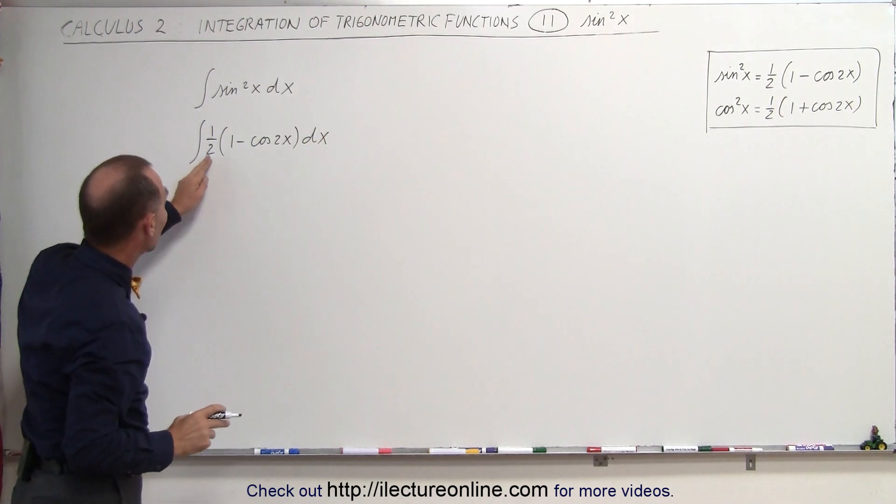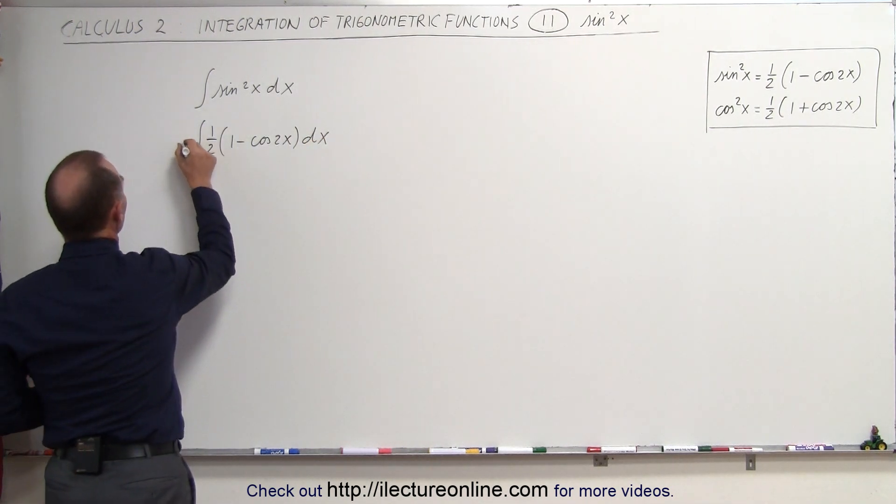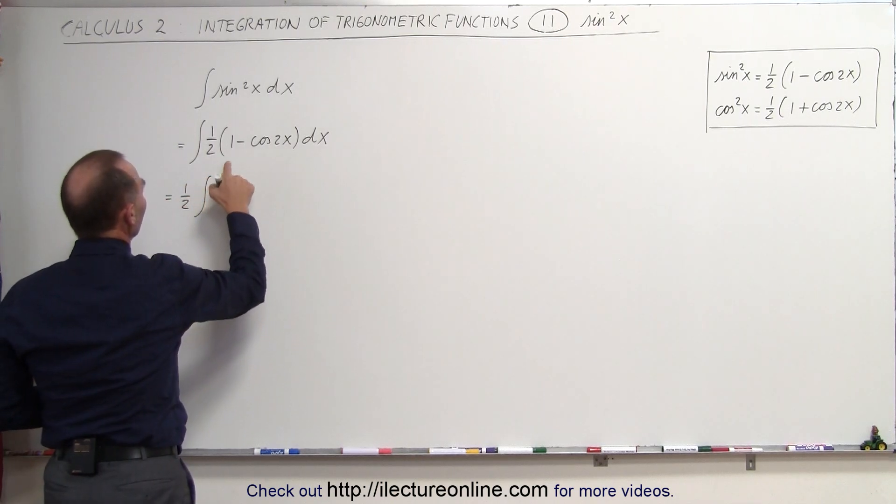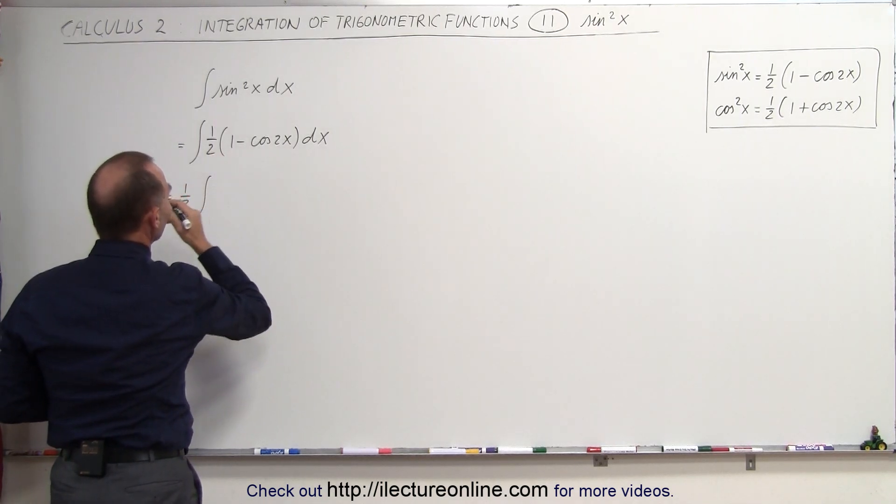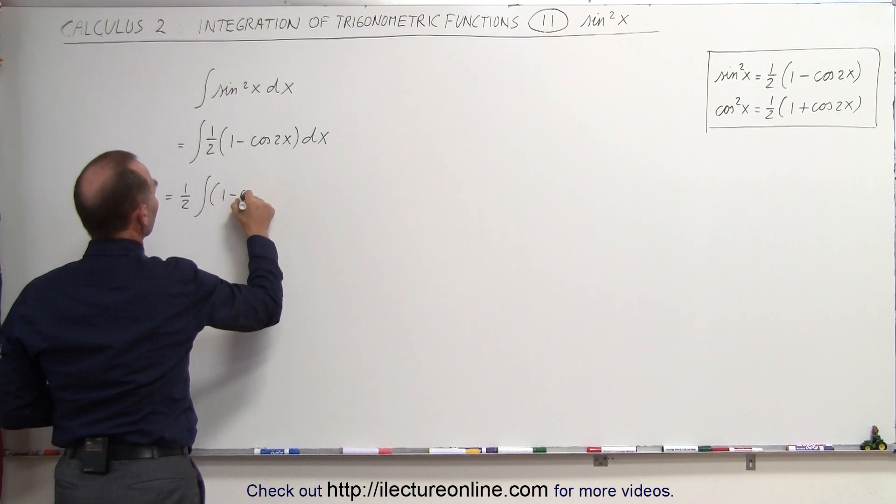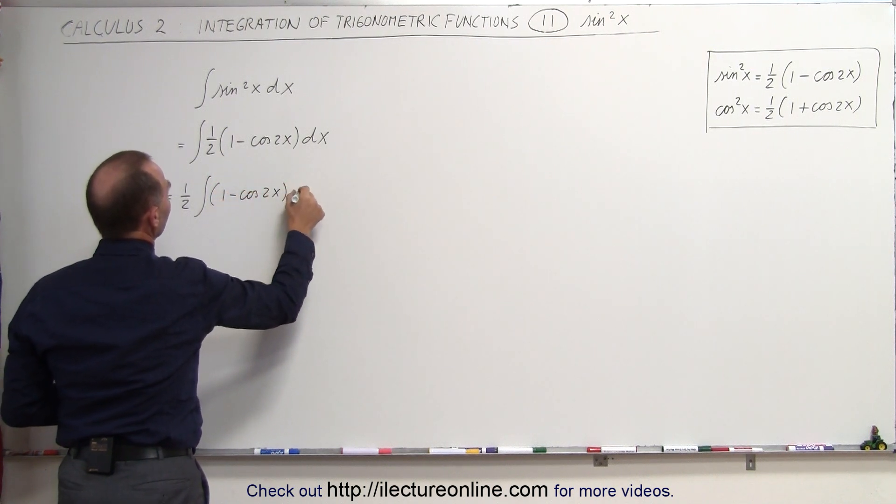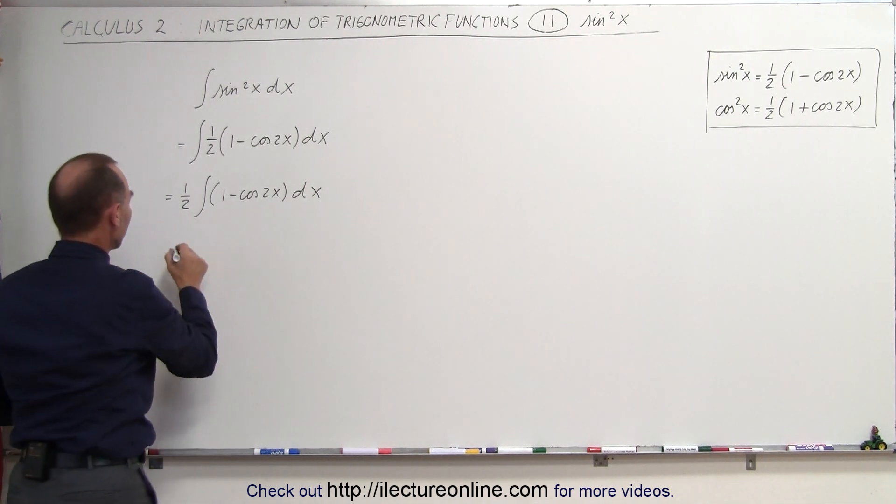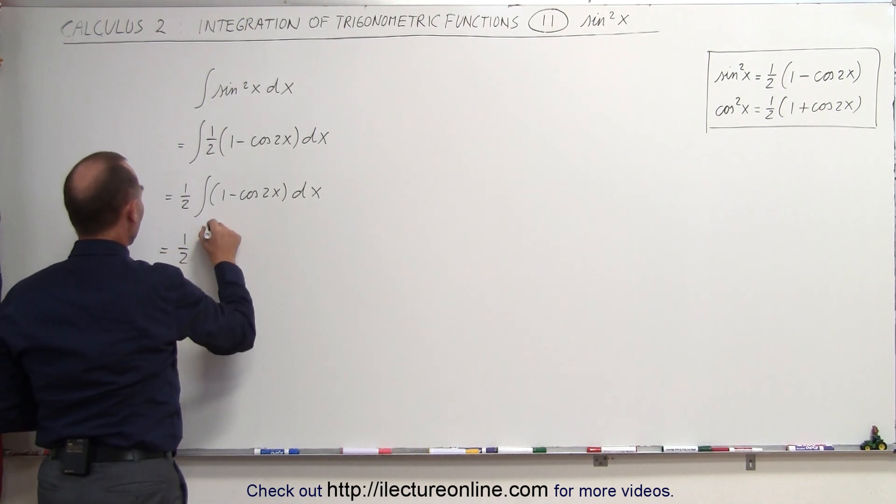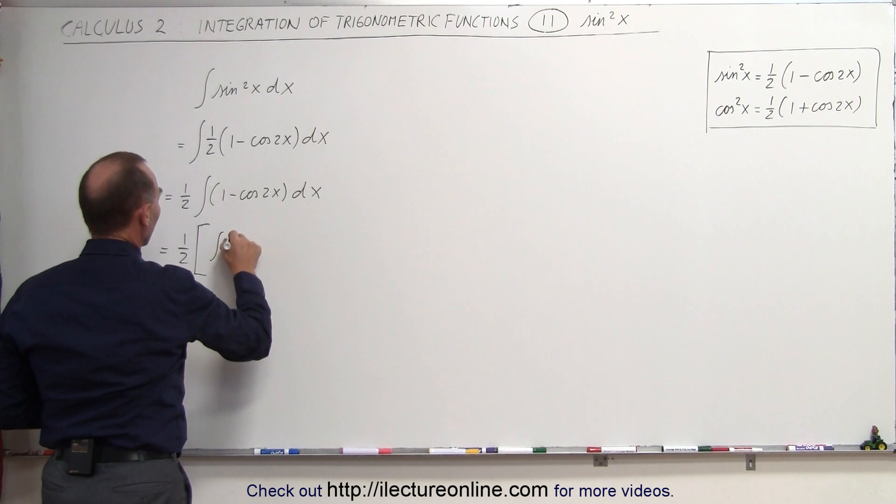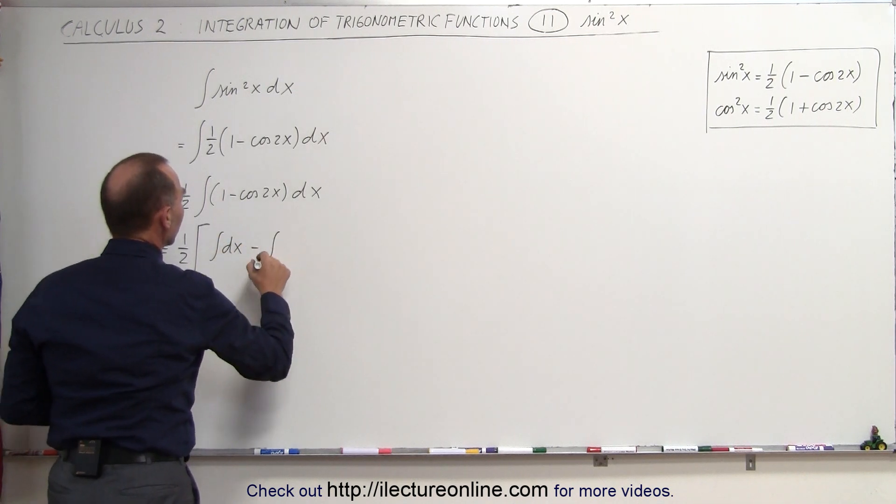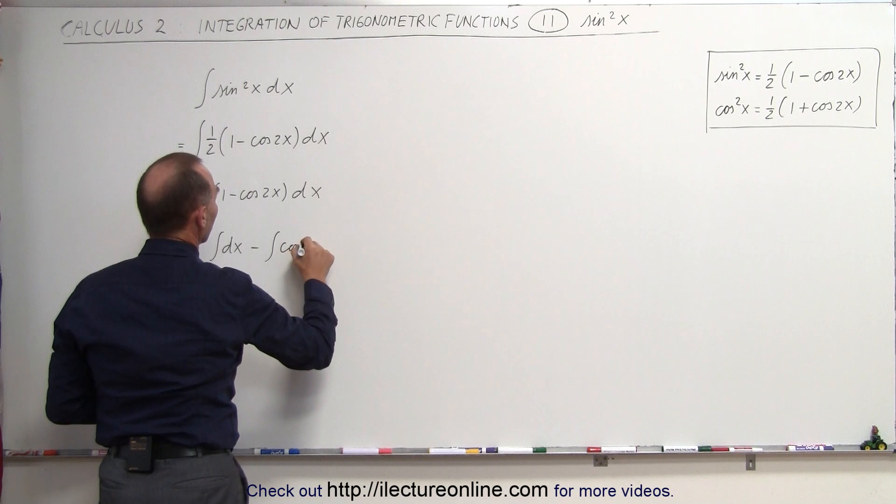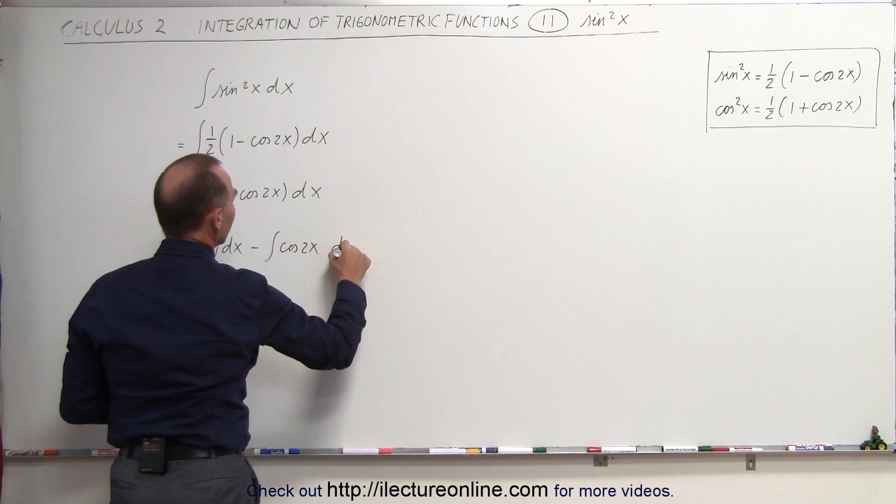Now notice we can take the one-half outside the integral sign. This is equal to one-half times the integral of one minus cosine 2x dx. And then we can separate this into two separate integrals. So this can be written as one-half times the integral of 1 dx minus the integral of cosine 2x dx.